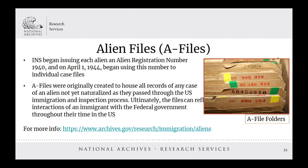Beginning in April of 1956, the Immigration and Naturalization Service streamlined their filing systems, and the A-file became the single point of documentation for immigrants. Starting at this point, the files can even include documentation of the naturalization process, including preparatory applications, copies of the declaration and petition, and the final certificate.